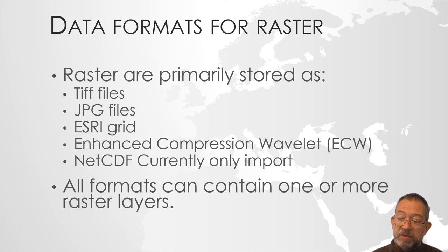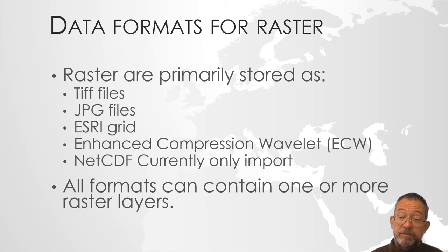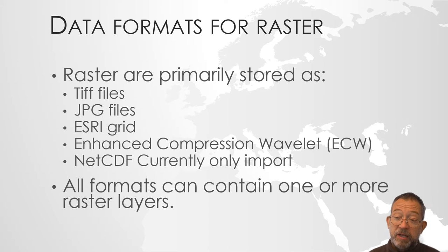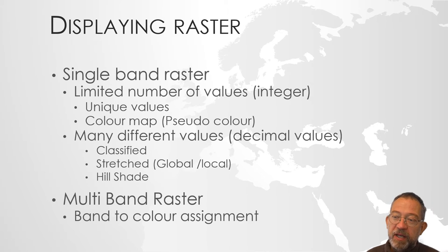All of these formats can contain one or more raster layers. A terrain model will typically have only one layer. An aerial photograph will typically have three layers — red, green, and blue. A satellite image can have many layers. And all of these formats are capable of handling multiple layers.